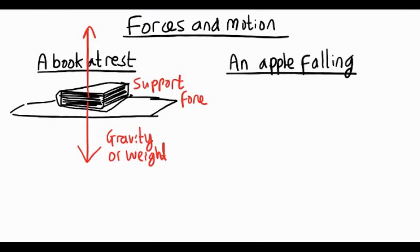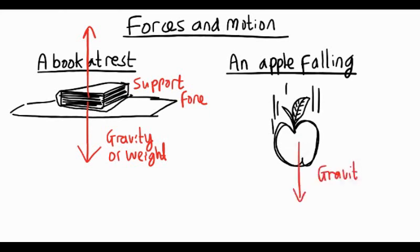Take the example of an apple falling. As the apple falls, it begins to speed up towards the ground. The apple's accelerating downwards due to gravity acting on it. So the apple's weight or gravity pulls it down, making it accelerate. And there'll be a little bit of air resistance working upwards against it too, and that'll increase as the apple speeds up.